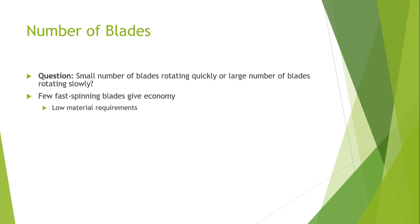Few fast-spinning blades give economy. We have seen from different wind turbine design curves that the high-speed two-blade design has the maximum capacity. Fewer fast-spinning blades also give economy because the material consumption in making two blades is less compared to the three-blade modern design.